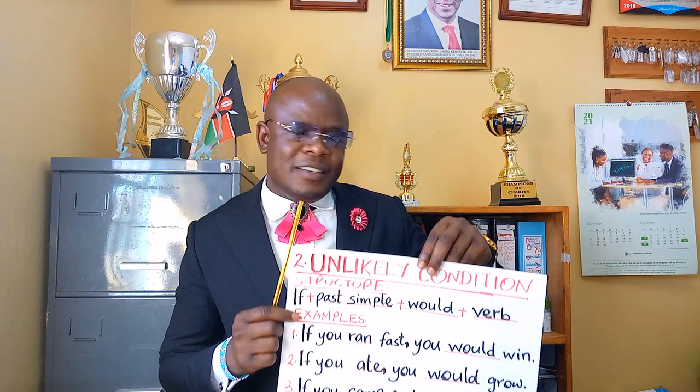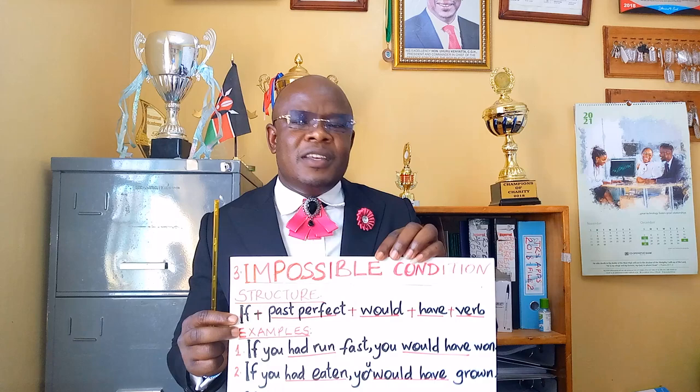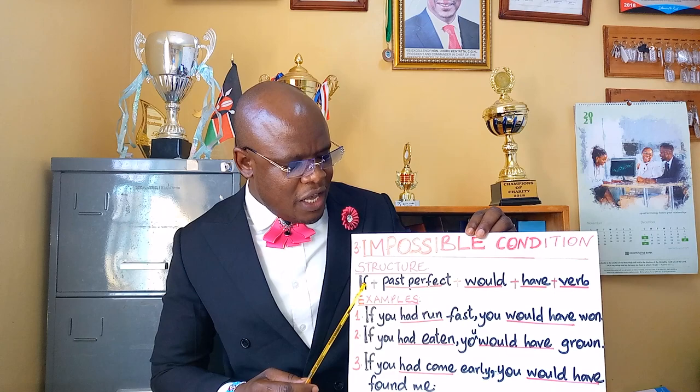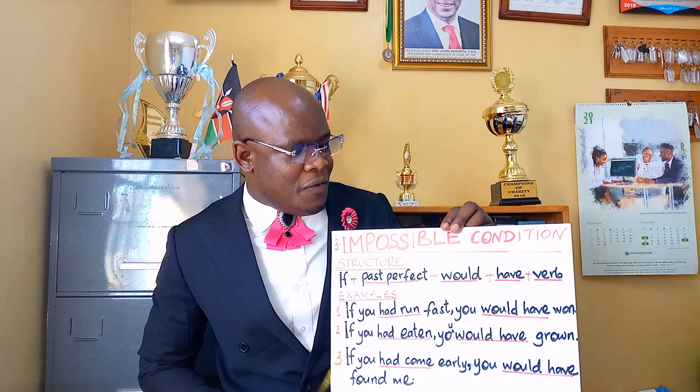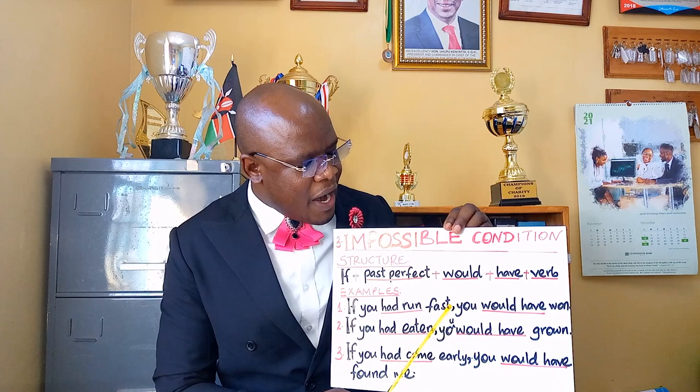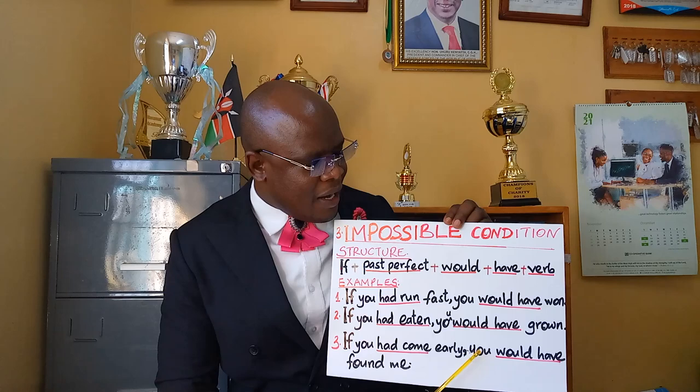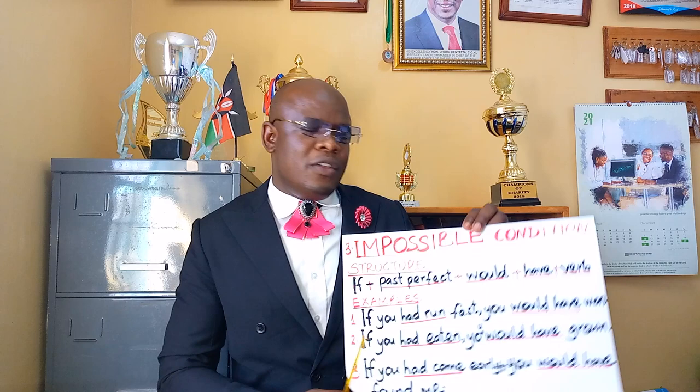The last set of conditional sentences — the impossible conditions. These are actions that are irreversible, they are regrettable, you cannot take them back, you cannot repeat them. They take the structure of 'if' plus past perfect tense plus 'would' plus 'have' plus the verb. Sentence examples include: if you had run fast, you would have won; if you had eaten, you would have grown; if you had come early, you would have found me. Those are the impossible condition sentences.